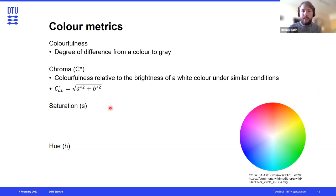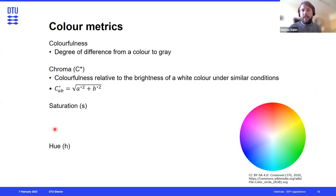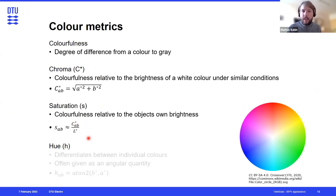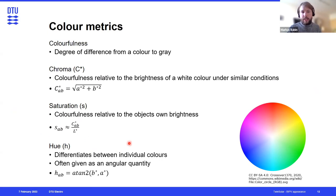Similarly, saturation compares chroma or colorfulness to the lightness of a color, because a very dark color will never appear as saturated as something very bright — so saturation is approximately chroma over lightness. And then we have hue, which describes the color tone and is usually given as an angular quantity — the angle in the color wheel would be the hue.